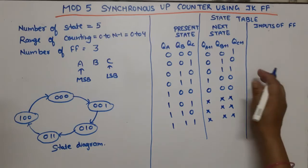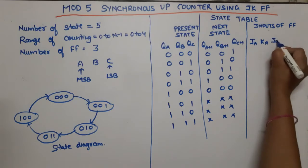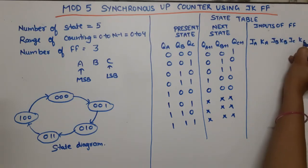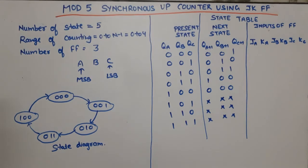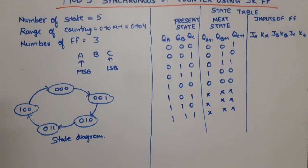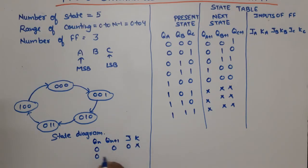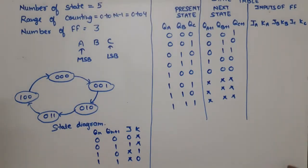Now our inputs for the 3 flip-flops are JA, KA, JB, KB, JC, KC — two inputs per flip-flop. For this, we need the excitation table of the JK flip-flop: when Qn=0 and Qn+1=0, J=0, K=X; when Qn=0 and Qn+1=1, J=1, K=X; when Qn=1 and Qn+1=0, J=X, K=1; when Qn=1 and Qn+1=1, J=X, K=0. We apply this excitation table to all state combinations.